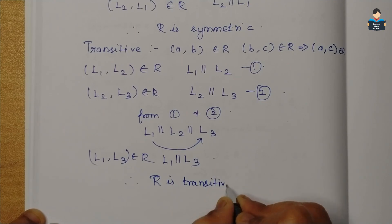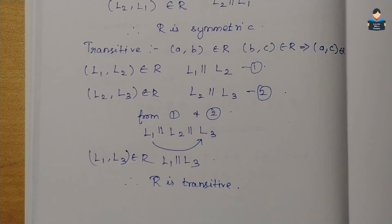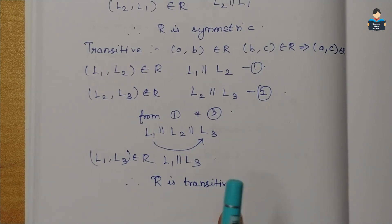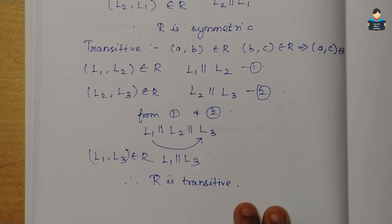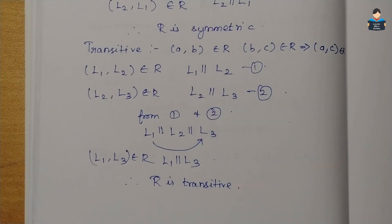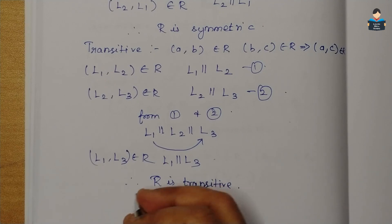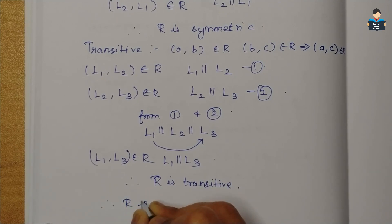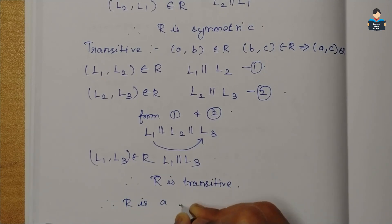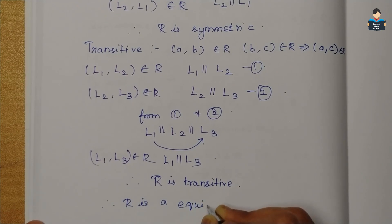So relation R is reflexive, symmetric, and transitive. Therefore, R is an equivalence relation.